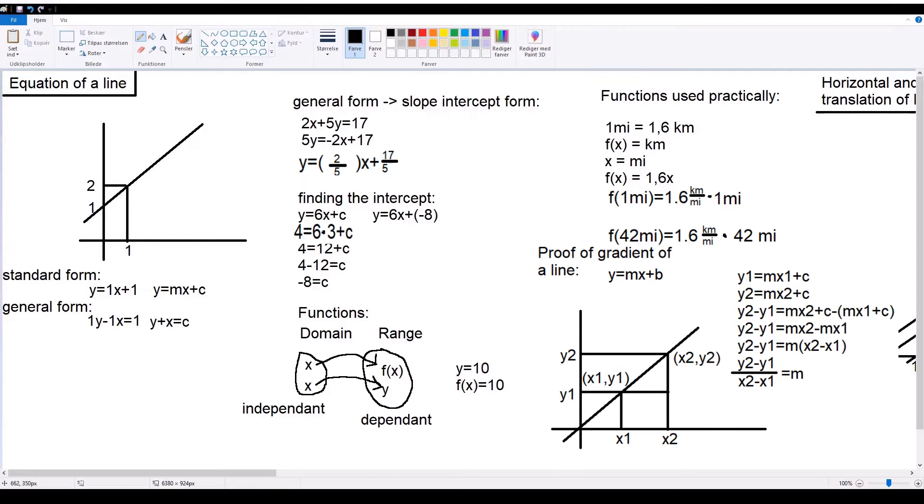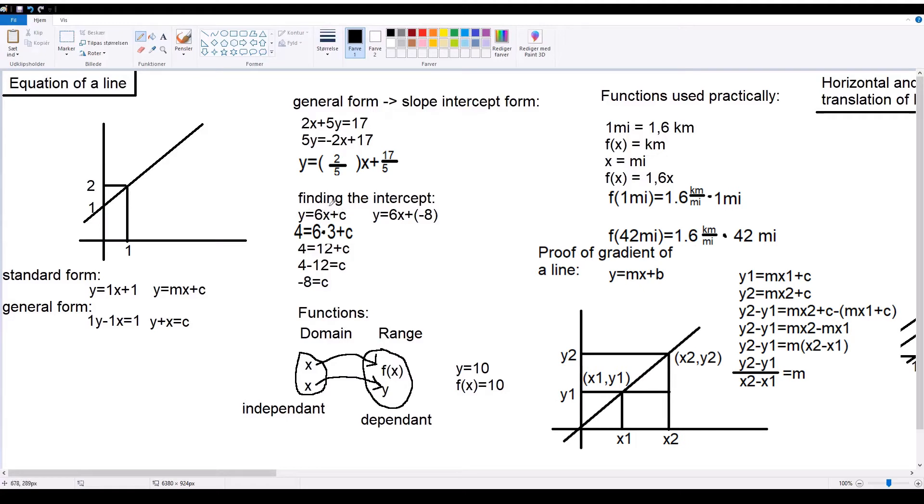In some cases, you might have a formula where you don't have the intercept already. So, to solve this kind of formula, you can find the intercept by using this method. If you have a point which you know is on the line,